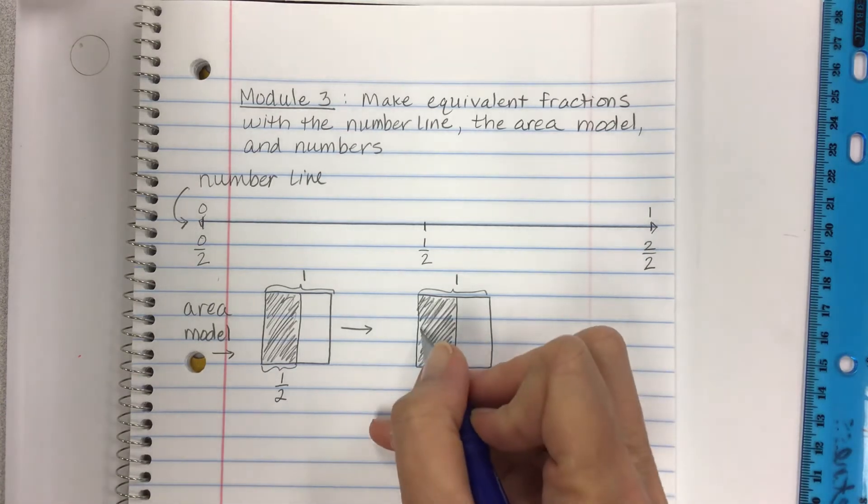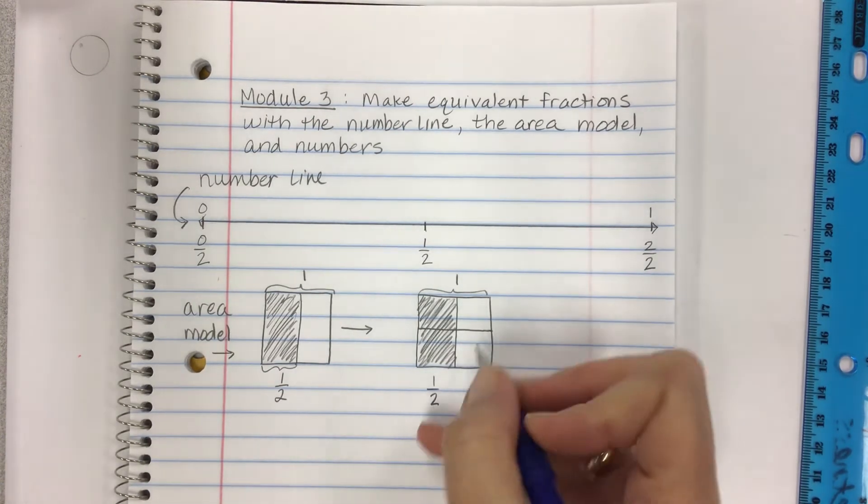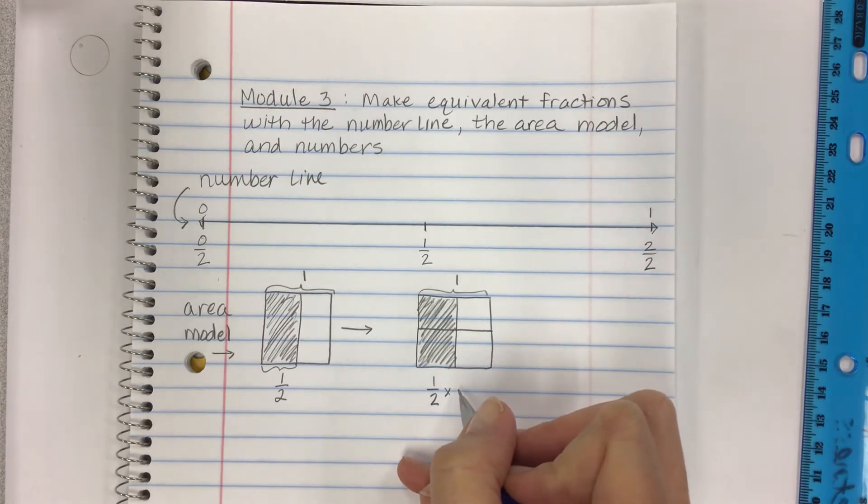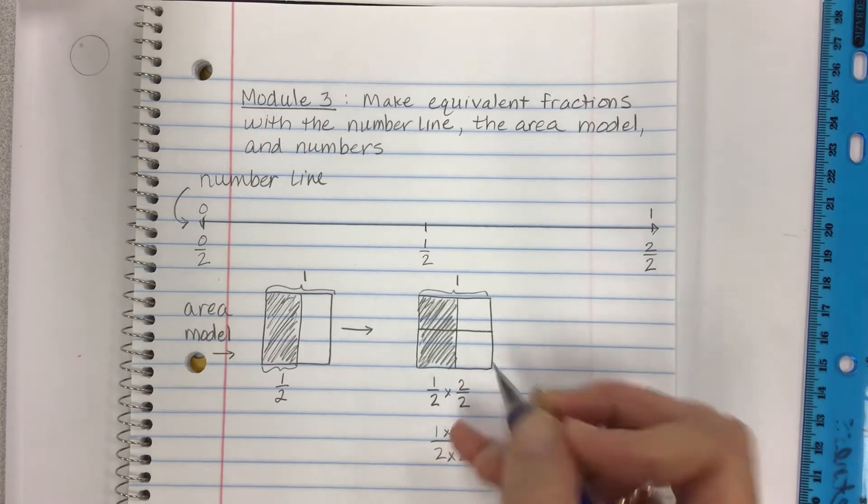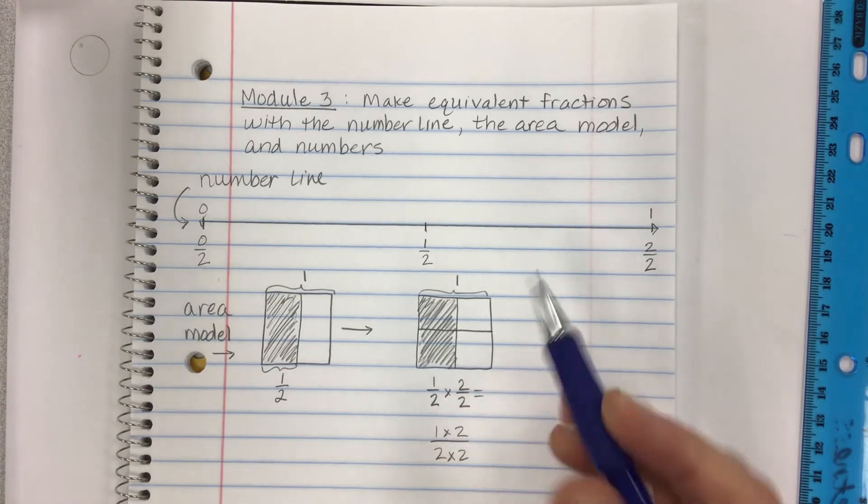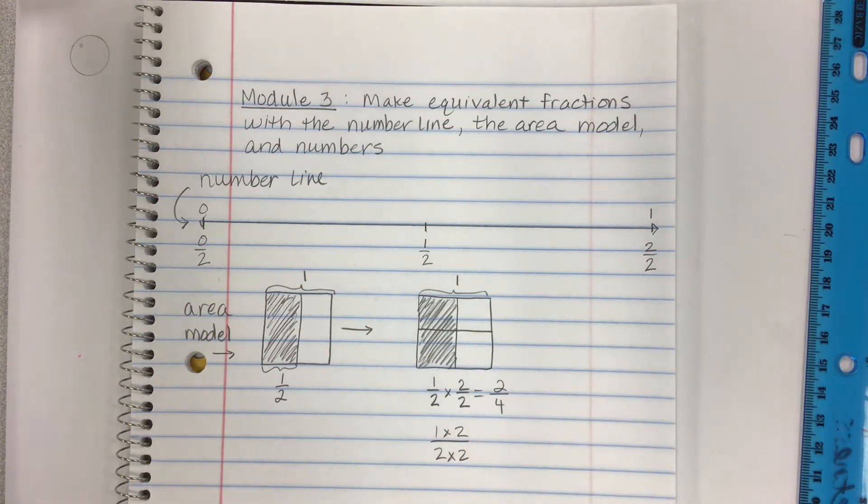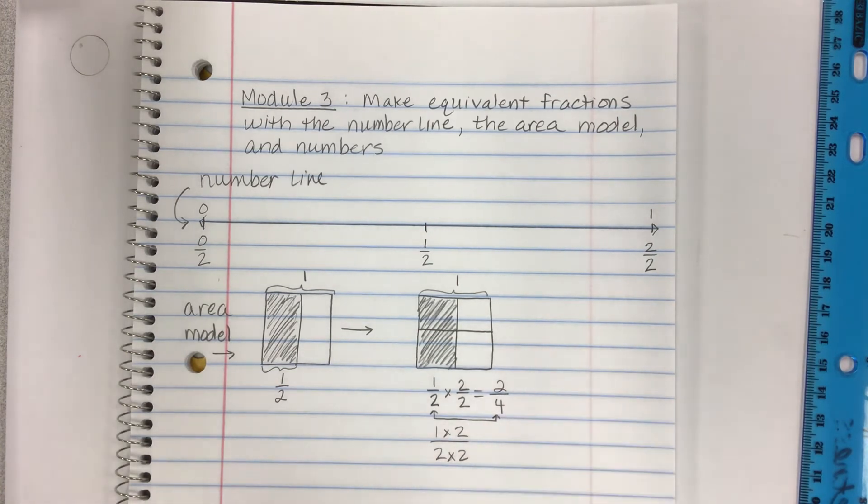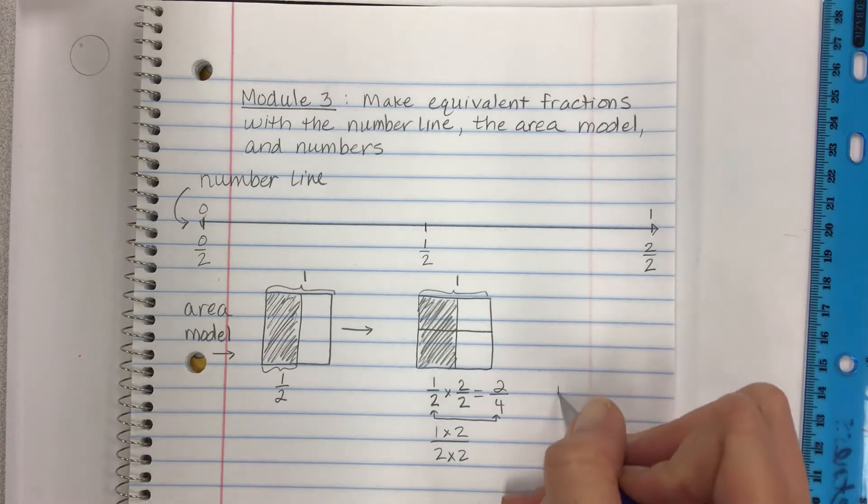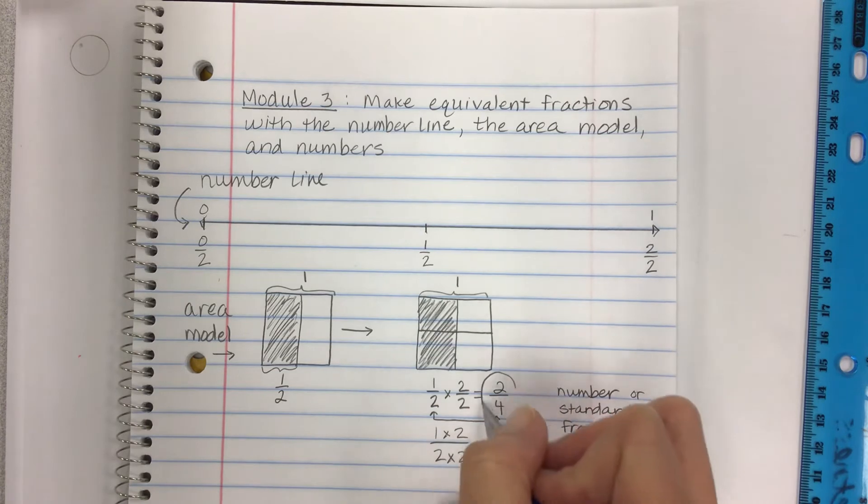Now we're making an equivalent fraction right here. So we're going to draw a line across. And so what we've done is we've taken the one half, and I have made it into two groups of two. Sometimes the book does this. They go one times two over two times two. I have just, this is how I do it. That's just my way. And so when you are making two groups of two, what happens is you end up with two that are shaded out of four. And so this is an equivalent fraction. This is the same value as the last part. One half has the same value as two fourths. So this is going to be your number form or standard fraction form. And that's what this is. And so we're practicing making equivalents in lesson one, but also throughout module three. We're going to be going back and forth with all this stuff.